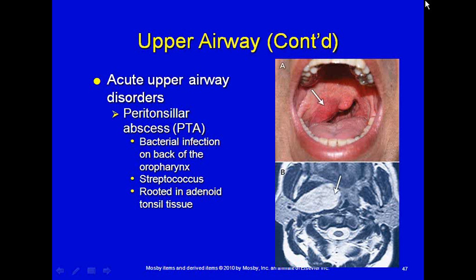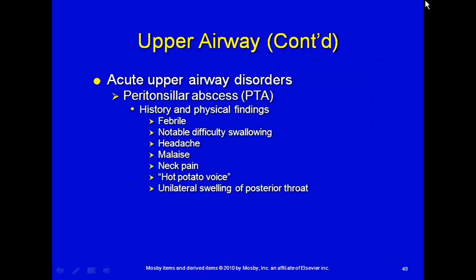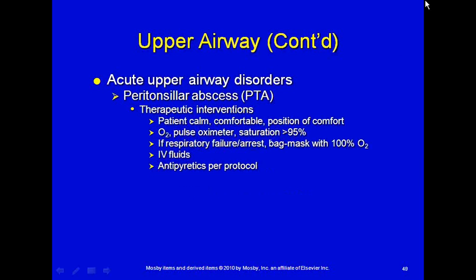Peritonsillar abscess is a bacterial infection on the back of the oropharynx — the tissue over the tonsils — usually caused by streptococcus, rooted in the adenoid-tonsillar tissue. The patient will have fever, difficulty swallowing, headache, feel sick, neck pain, and that hot potato voice. There may be unilateral swelling in the back of the throat. Interventions: keep the patient calm and comfortable, give supplemental oxygen based on pulse oximetry and work of breathing, use a bag-valve mask if respiratory failure occurs, establish an IV, hook up a heart monitor, and treat fever.